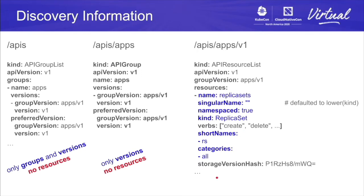Discovery and REST mappings are connected. On the slash APIs endpoint, you get all API groups, their versions, and preferred versions. On slash APIs/apps, you get basically the same but just for the apps group. In both cases you don't get resources — to get resources you have to go one level deeper to APIs/apps/v1. There you get everything about all resources. For replica sets: 'replicasets' lowercase plural is the resource name; singular name is empty so the REST mapper fills in the lowercase kind. The scope is namespace-scoped, the kind is ReplicaSet uppercase. The verbs are given so you know what you can do. Short names are returned for kubectl aliases, and categories let you list all resources including replica sets.